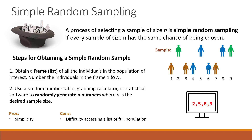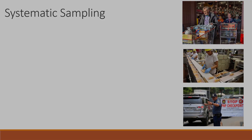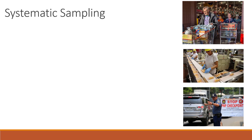However, this method also has a disadvantage: the difficulty of accessing a list of the full population. Not always are you able to have a list of all individuals in the population, and that would make it impossible to conduct simple random sampling. For that, we have other sampling methods. Let's learn the next one — it's called systematic sampling.